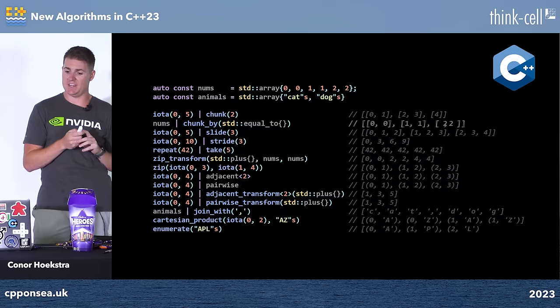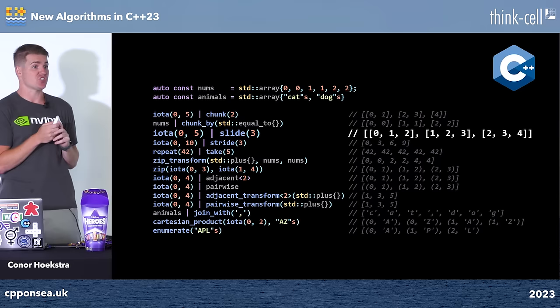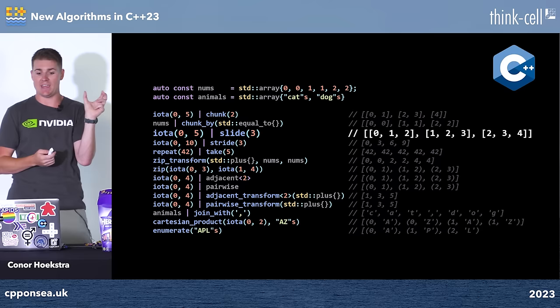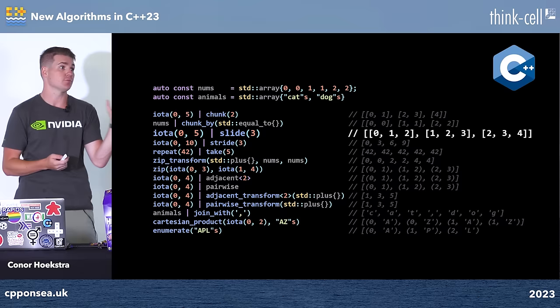Next is 'slide' — a sibling to chunk but with overlapping windows and a step size of 1. With a window of 3 over {0,1,2,3,4}, you get {0,1,2}, then {1,2,3}, then {2,3,4}. Chunk gives non-overlapping windows; slide gives overlapping ones. They're very similar — it just depends on whether you want overlap.